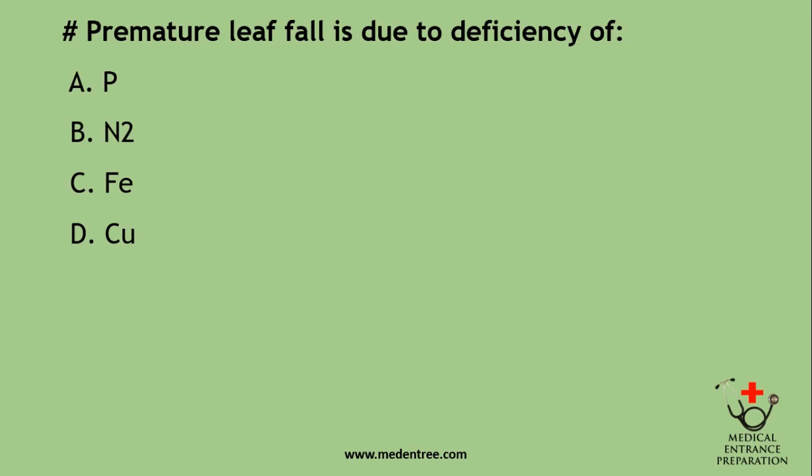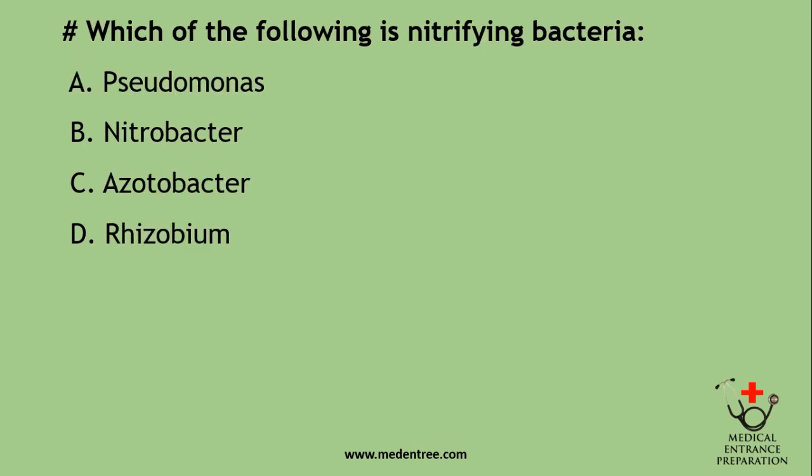Premature leaf fall is due to deficiency of: phosphorus, nitrogen, iron, or copper? The correct answer is phosphorus — P for premature leaf fall. Which of the following is a nitrifying bacterium? Pseudomonas, Nitrobacter, Azotobacter, or Rhizobium? The correct answer is Nitrobacter.